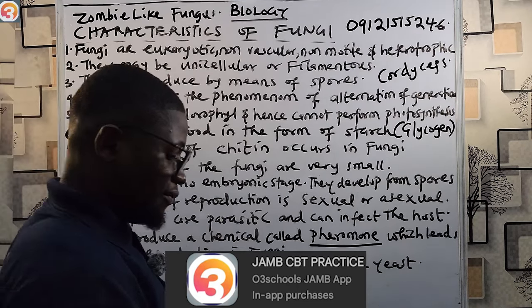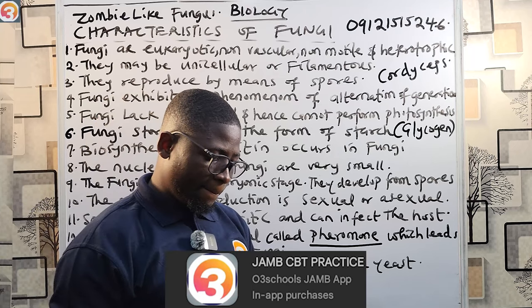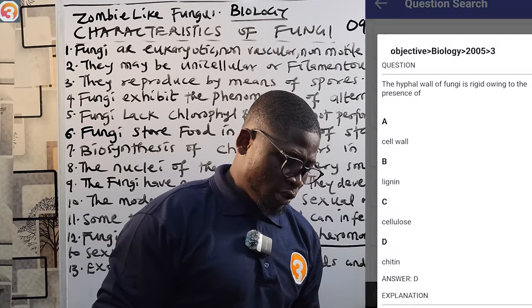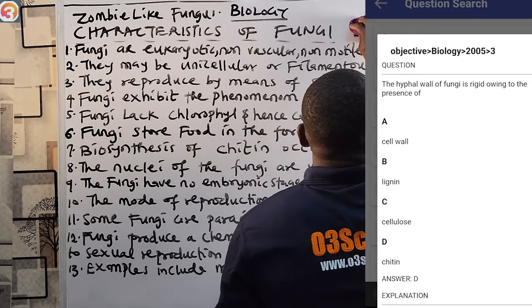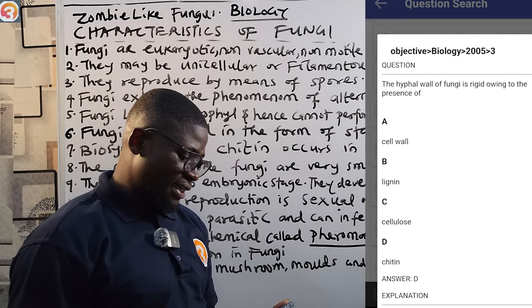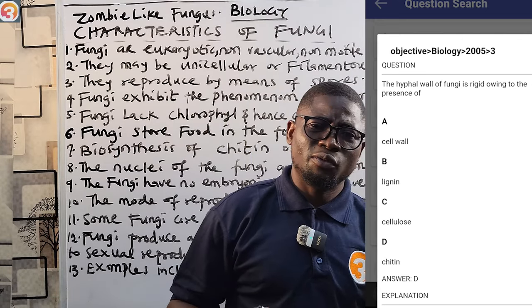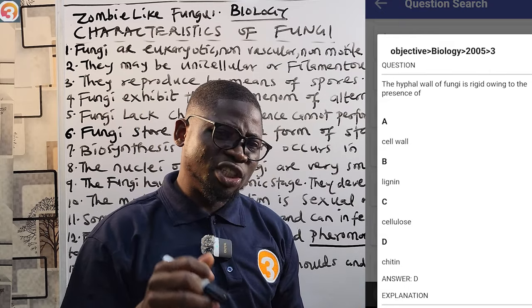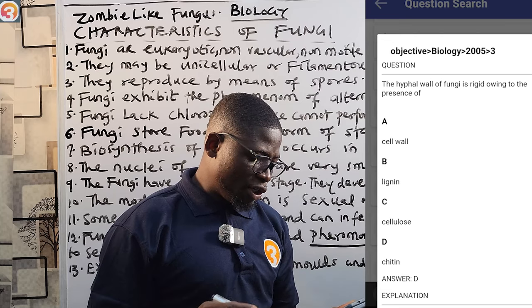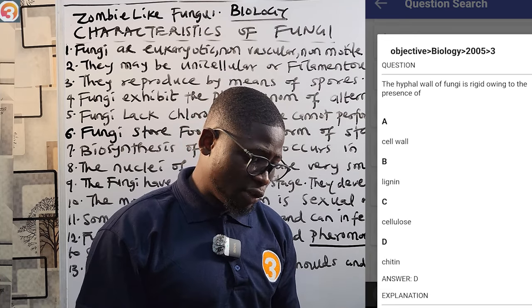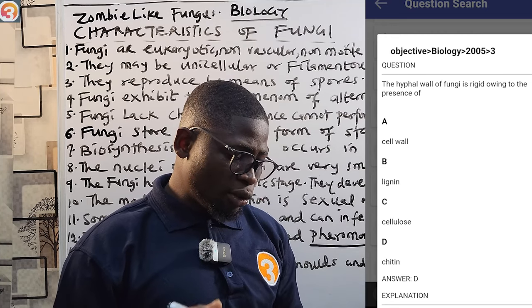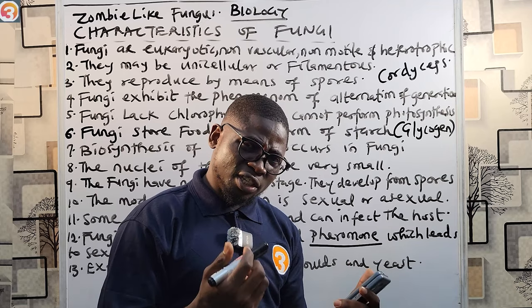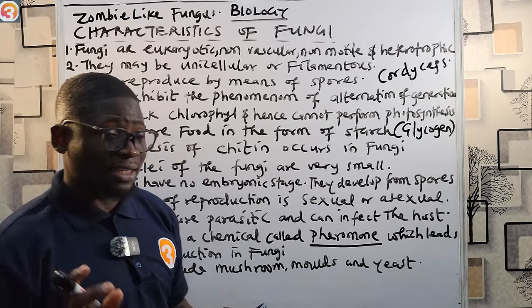This is the app on my phone. Now, this is a 2005 question, number three. It said: the hyphal wall of fungi is rigid owing to the presence of what? The answer is chitin. So the hyphal wall of fungi is rigid owing to the presence of chitin. The options were: A — cell wall, B — lignin, C — cellulose, D — chitin. So chitin is responsible for the rigid nature of the hyphal wall. Please take note of that.